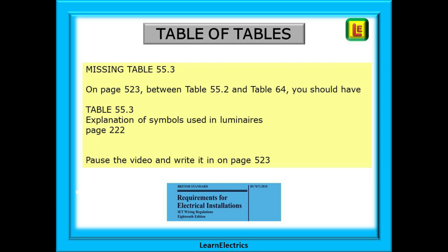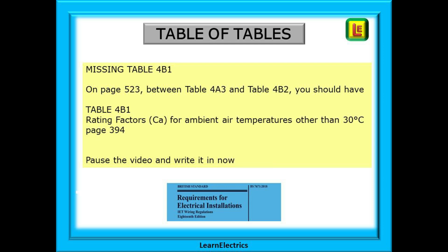Pause the video and write in this information on page 523 now. Another missing table is Table 4B1. Again, on page 523 and between Table 4A3 and Table 4B2 you should have Table 4B1. It is called Rating Factors CA for Ambient Air Temperature other than 30 degrees centigrade, and the page number to write in is 394.